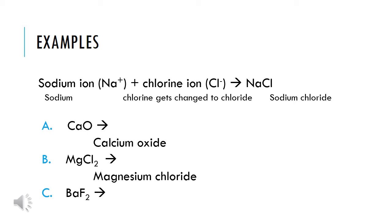Here's one more example: BaF2. The answer here is barium fluoride. Barium, BA, is your cation and it's written first, so the name stays the same — barium. Fluorine is written second and it's your anion with a negative charge. So we have to change the ending to -ide. Fluorine becomes fluoride.